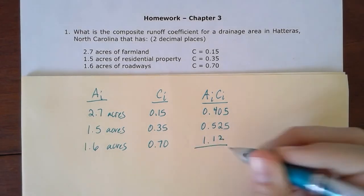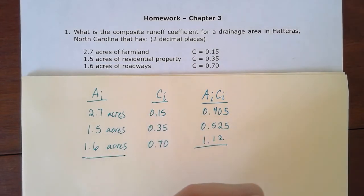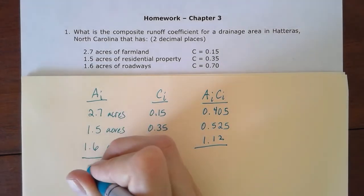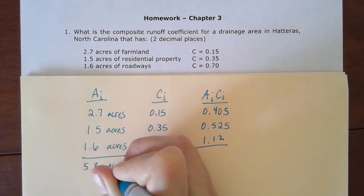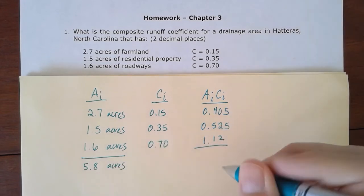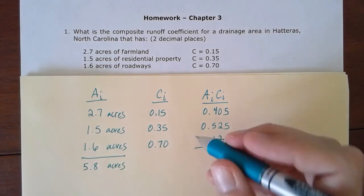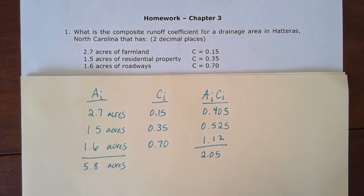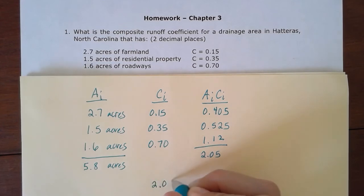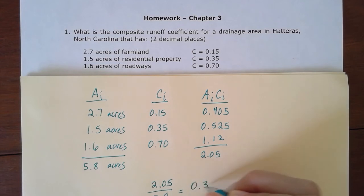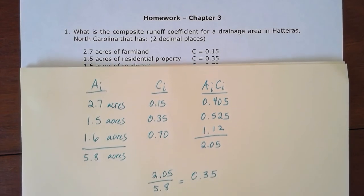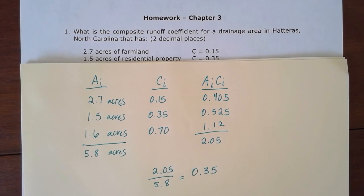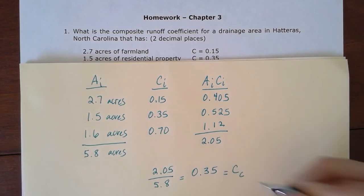Now to use that formula, I'm going to sum up my individual areas and sum up the individual area-times-coefficient products. My total area is 5.8 acres, and my total of individual area times coefficient is 2.05. Dividing 2.05 by 5.8 gives me 0.35 for my composite runoff coefficient, which we call C sub C.